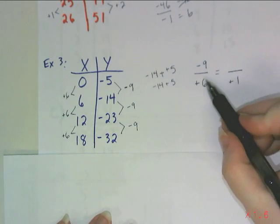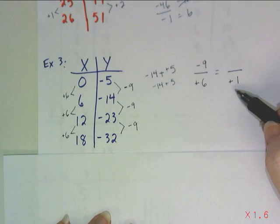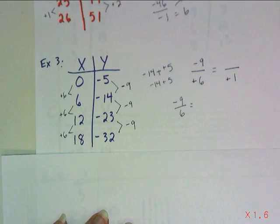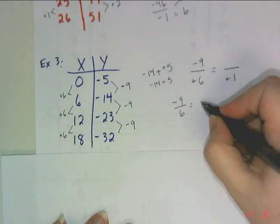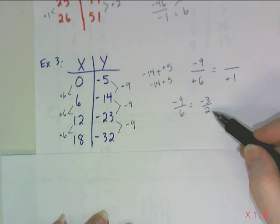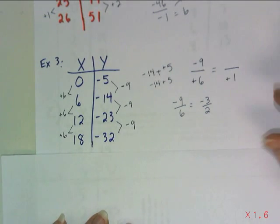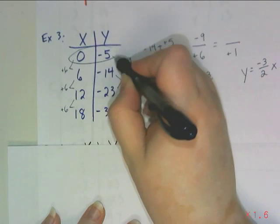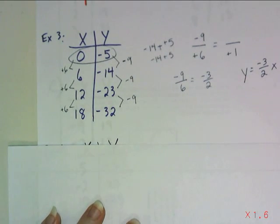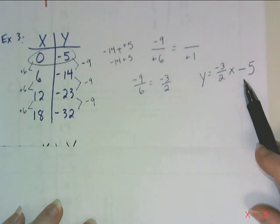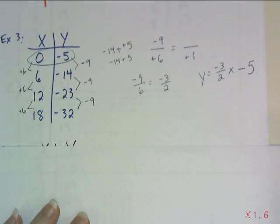I take negative 9 over 6 and simplify that fraction. Negative 9 over 6 simplifies to negative 3 halves. That means every time x increases by 1, y decreases by 3 halves. It's better to leave it as an improper fraction when writing the equation. So we get y equals negative 3 halves x. Looking at the table, my y-intercept is minus 5, so the full equation is y equals negative three-halves x minus 5.